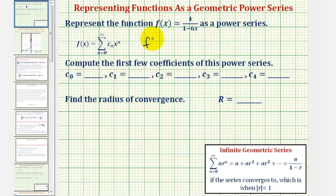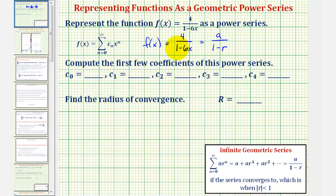Since f(x) = 4 divided by the quantity (1 - 6x) matches the form a divided by (1 - r), we can easily identify a and r. Notice how our denominator is exactly in the correct form of one minus a quantity — we don't need to manipulate the function. Here, a is equal to four and r is equal to 6x.